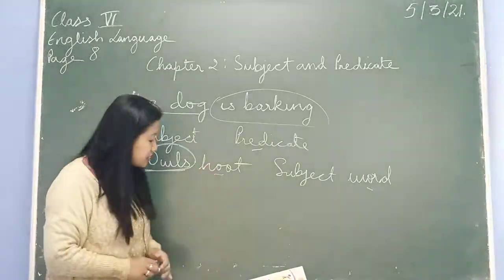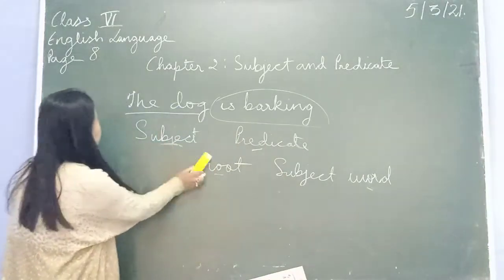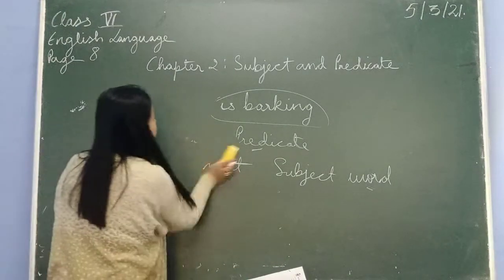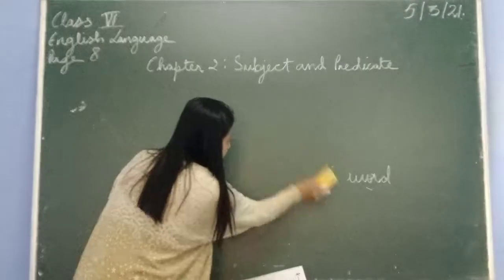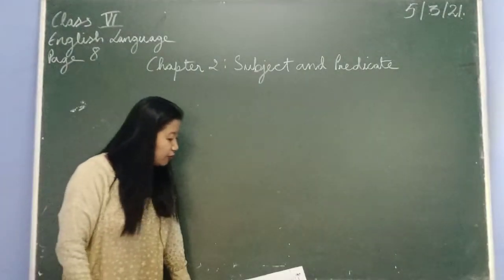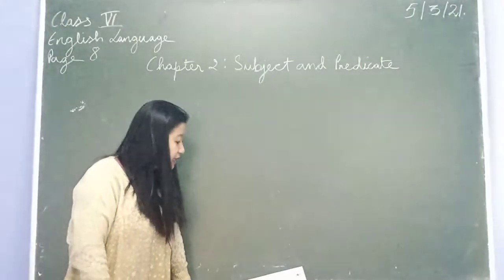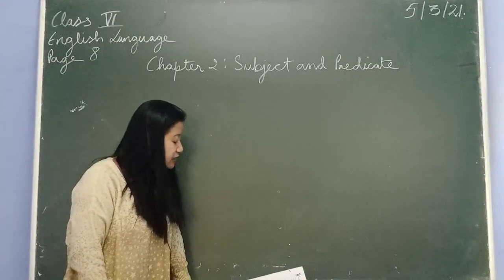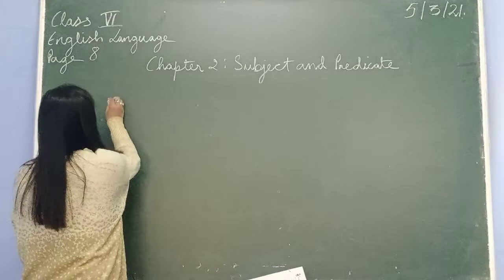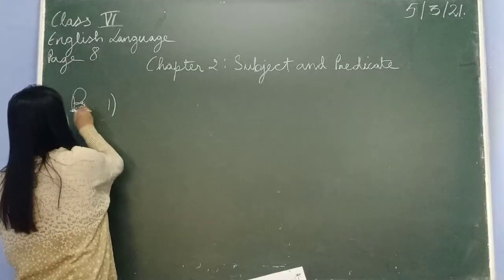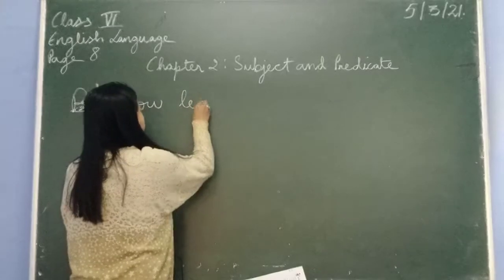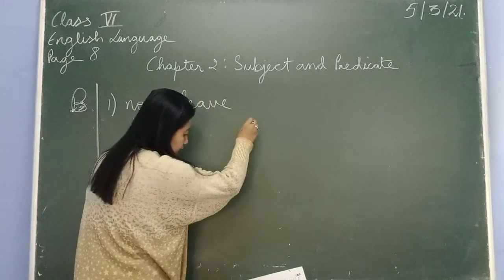I hope this is clear. Now if you go to page number 10 — Exercise B: arrange these groups of words to form sentences, then punctuate and identify the subject and the predicate of each sentence. So for number one, these are your group of words.